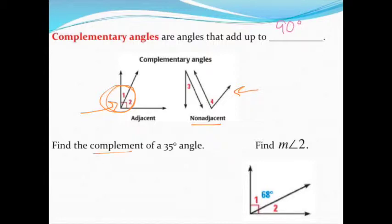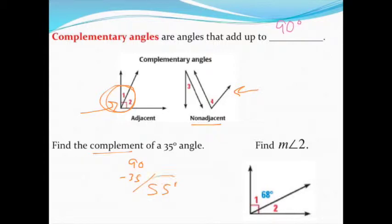When they say find the complement of a 35-degree angle, we know that means: what's the angle we would have to add to 35 to make it add up to 90? To find that, we'll do 90 minus 35 and come up with an angle of 55 degrees.